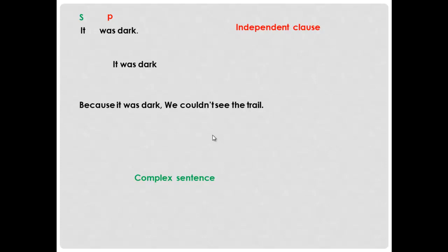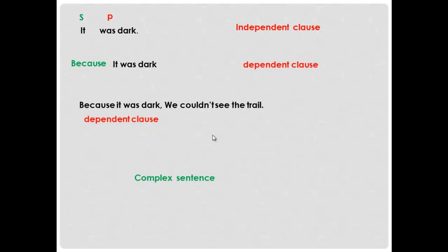Now let's add the subordinating conjunction to the same sentence: 'Because it was dark...' — there's something missing. The meaning is not complete. 'Because it was dark, we couldn't see the trail.' Now I have a dependent clause together with an independent clause, and they form a complex sentence.